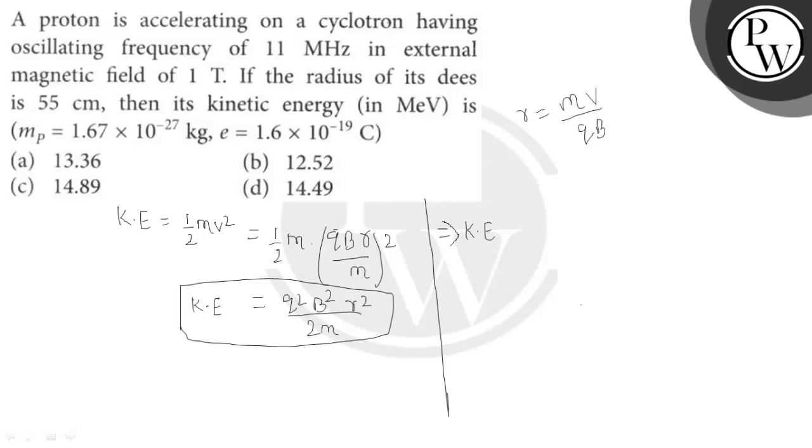Kinetic energy equals: charge of proton is 1.6 into 10 to the power minus 19, squared, times magnetic field squared - that's 1 squared - times radius. 55 cm, we'll convert to meters, so 0.55 squared.